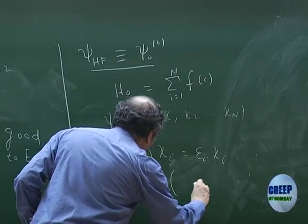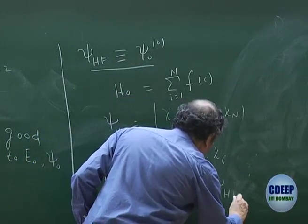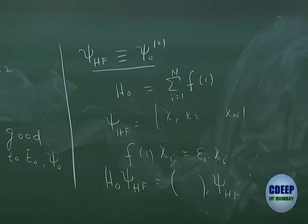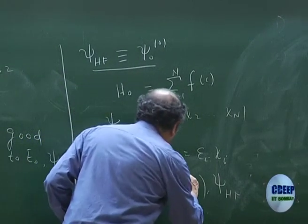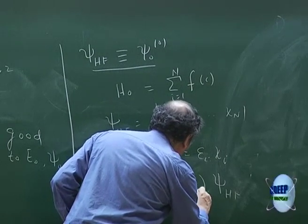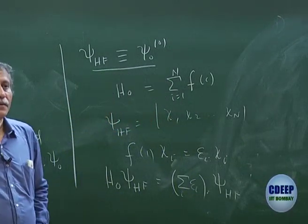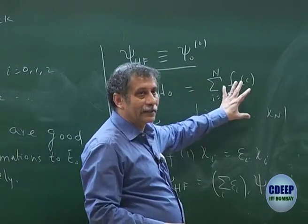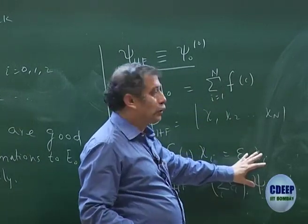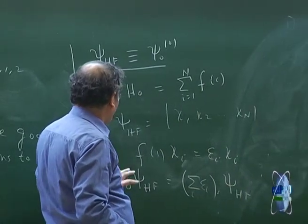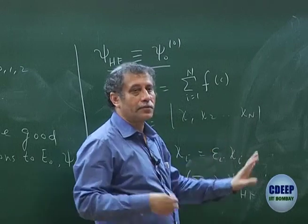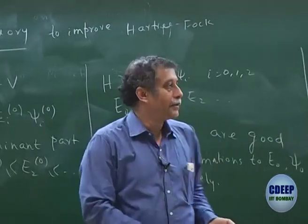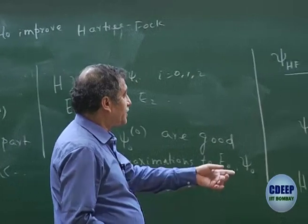So I can identify at least one H₀ — there may be others whose ground state solution is ψ_HF. And the eigenvalue will be the sum of orbital energies, E = Σεᵢ. Using the non-interacting theorem, H₀ is the sum of the Fock operator, whose solution is known. The eigenfunction of this operator would be the product of spin orbitals, and the eigenvalue will be the sum of the orbital energies.